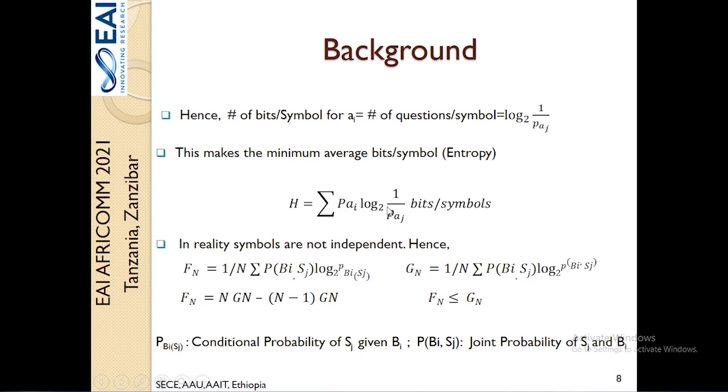However, in practice, natural languages are not independent or do not have a sense of independence between symbols. To this end, Shannon defined two additional entropy estimation techniques: the conditional and block entropies, which require the joint and conditional probability distributions of symbols within the language. Moreover, Shannon also established a correlation between the conditional entropy f of n and the block entropy g of n using the formula given here, and he showed that conditional entropy is always less than the block entropy.